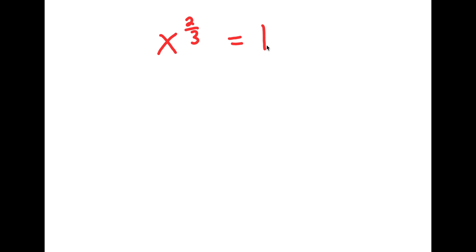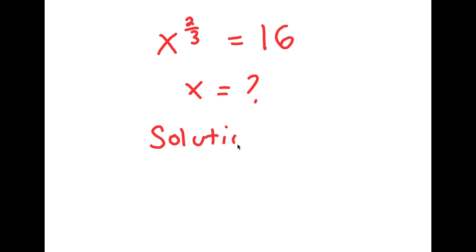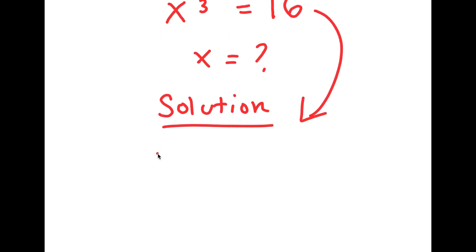In this problem, I have x to the power of 2 over 3 is equal to 16. We want to find the value of x here. For my solution, I'm going to start by rewriting my equation: x to the power of 2 over 3 is equal to 16.